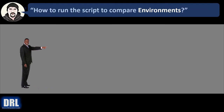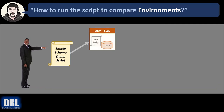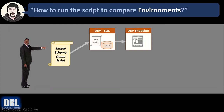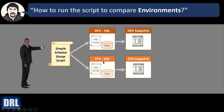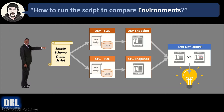So how do you run the scripts to compare environments? First, start with the simple schema dump script — we'll see where to download that from GitHub in a minute. Run that script against the dev database and output the results to a text file, giving you a dev schema snapshot with table names, field names, field sizes, and all that. Then run the script again against stage and output it to a stage snapshot. Use your favorite text diffing utility to compare the two text files and get a side-by-side comparison that quickly identifies the areas that are different.